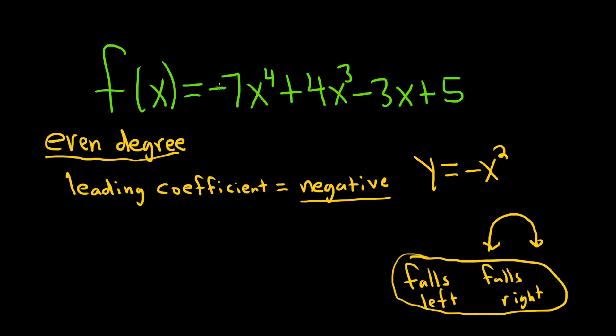If instead it was positive, you would have x squared. So if it was like a positive 7, it would be this, and then it would be rises left, rises right. But the negative makes it go upside down. I hope this video has been helpful.